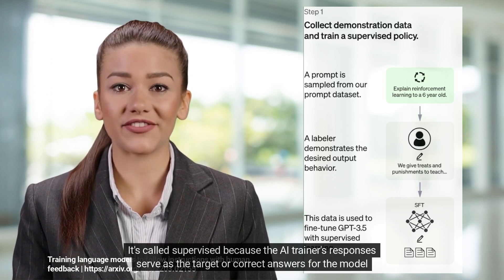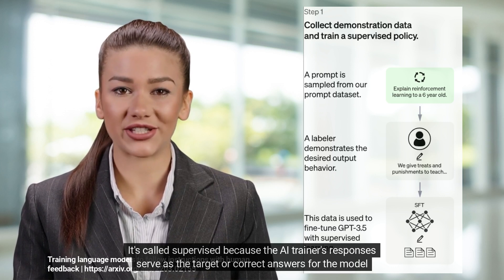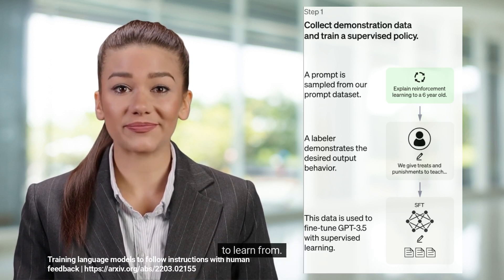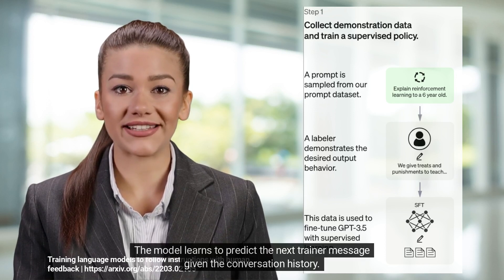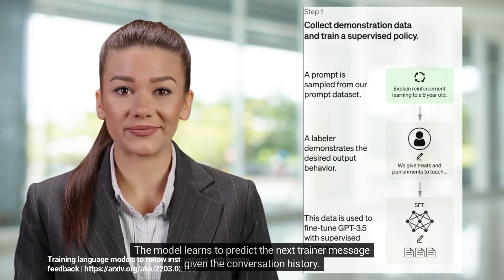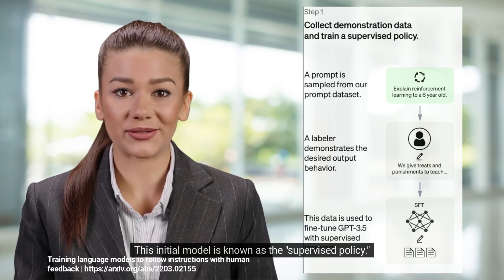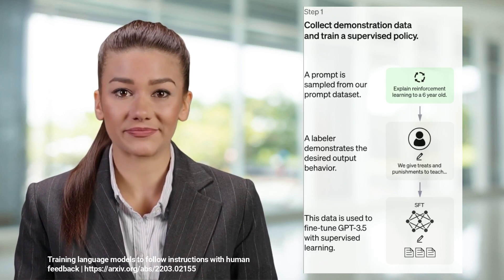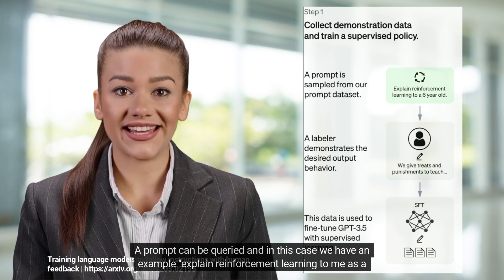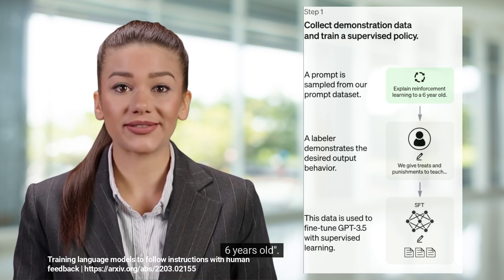It's called supervised because the AI trainer's responses serve as the target or correct answers for the model to learn from. The model learns to predict the next trainer message given the conversation history. This initial model is known as the supervised policy. A prompt can be queried — in this case, an example: "Explain reinforcement learning to me as a 6-year-old."